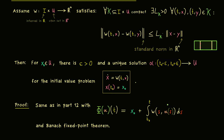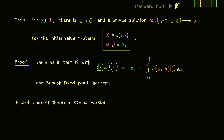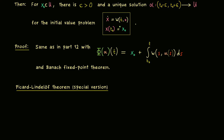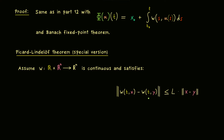In addition to that, I also want to show you a special version of Picard-Lindelöf which is easier to formulate and helpful in applications because it talks about global solutions. As before, we consider the initial value problem with a continuous function w, but now we assume a maximal domain — R times R^n. This gives us the possibility to consider a global Lipschitz condition. More precisely, we want to satisfy the inequality for every point x and y in R^n, without restricting ourselves to compact sets. We find an L that works for every point in the whole domain.